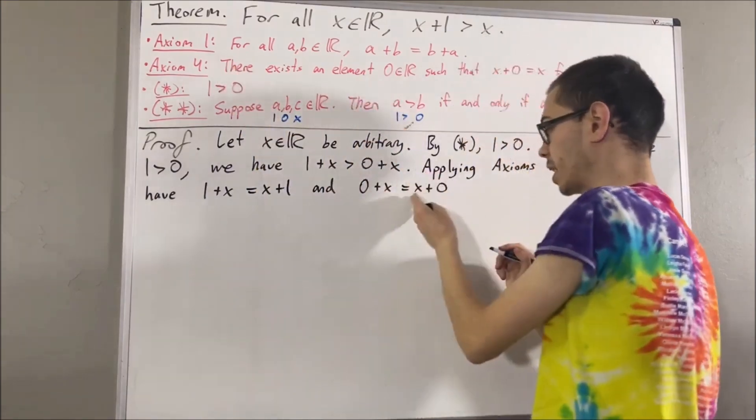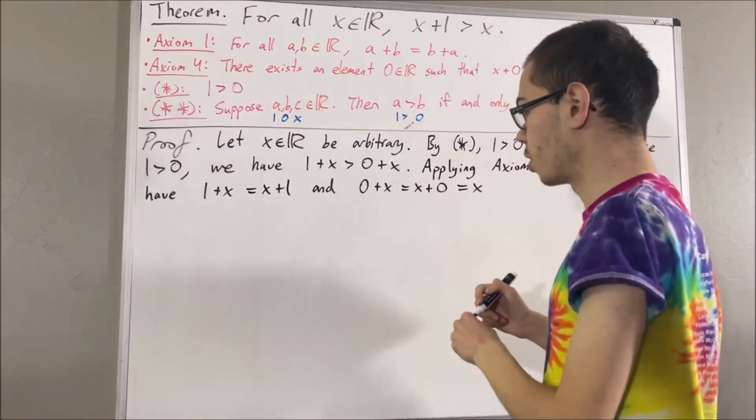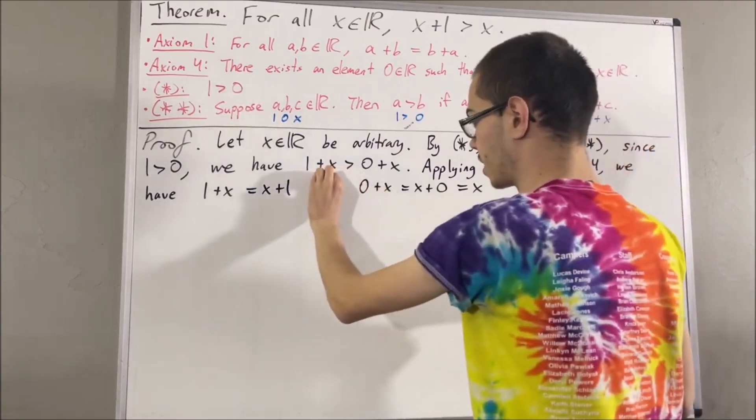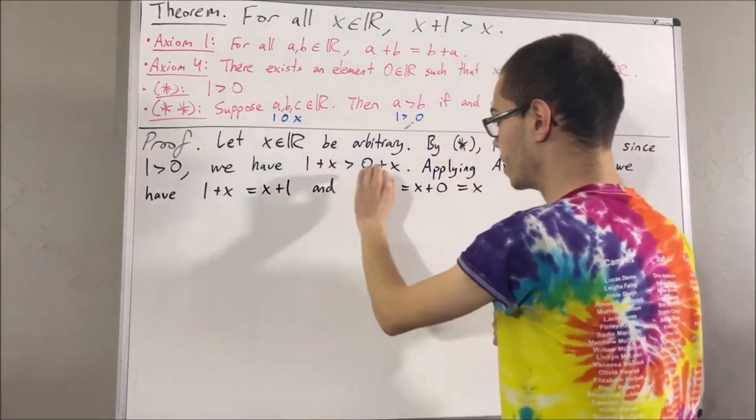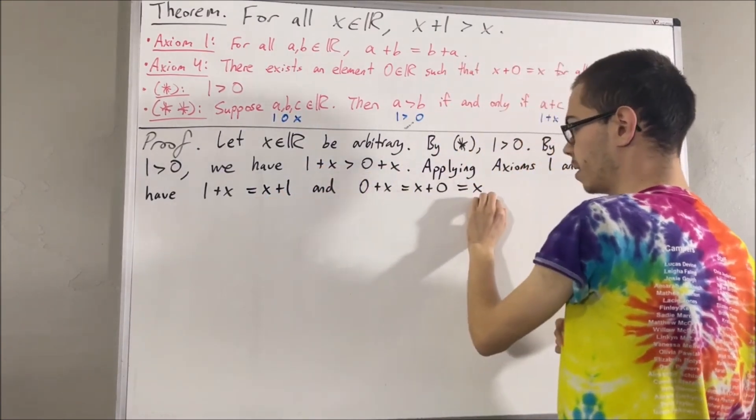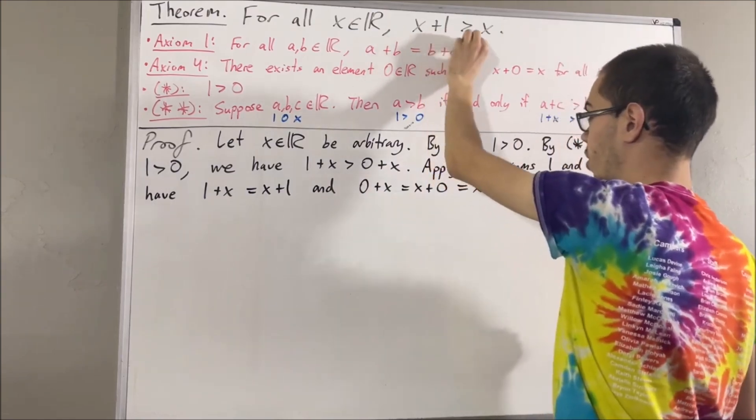And then, by axiom 4, x plus 0 is equal to x. So, this shows 1 plus x can be replaced with x plus 1, 0 plus x can be replaced with x. So, we have x plus 1 is greater than x.